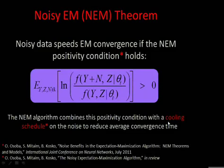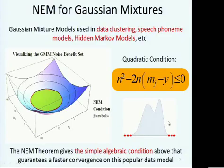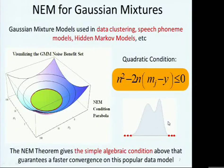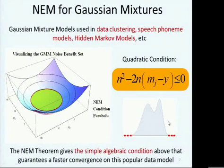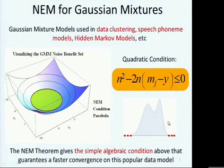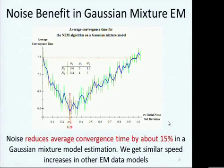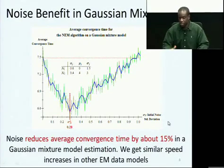We apply this first to the Gaussian mixture model, one of the most ubiquitous models in electrical engineering. The noisy EM condition results in a simple algebraic condition under which estimation of Gaussian mixture parameters converges faster, and the algorithm also has the effect of making estimation more robust to outliers. We find a 50% reduction in convergence time with the noisy EM algorithm, which is consistent across many other EM data models presented in a previous paper.